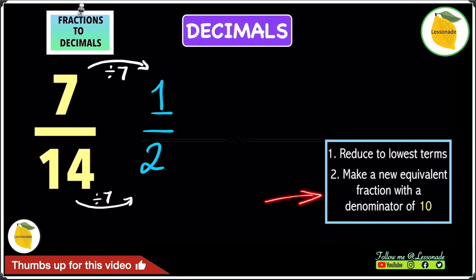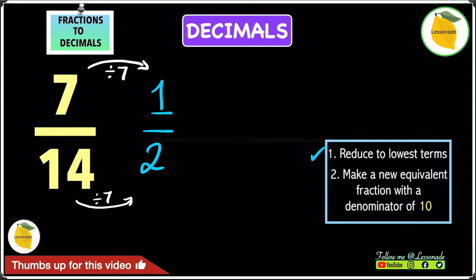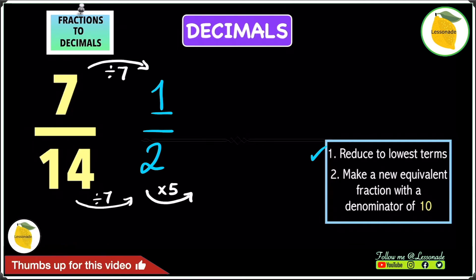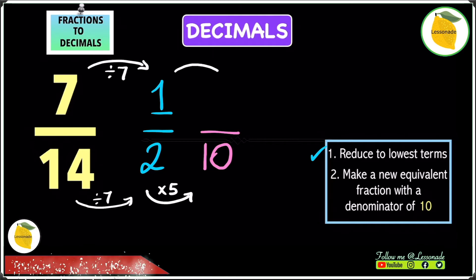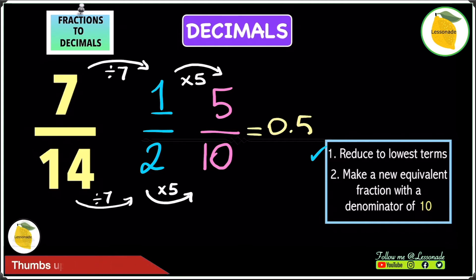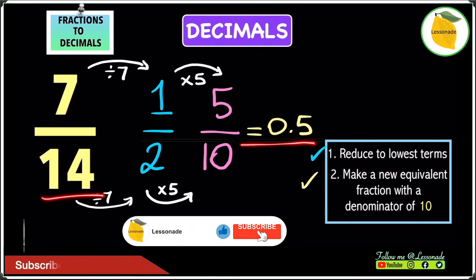The second step is to make a new equivalent fraction with the denominator of 10. To make this denominator 2 into a 10 we multiply by 5, because 2 times 5 is 10. Whatever you do to the denominator you do to the numerator, so you do 1 times 5 which gives you 5, and you get 5 over 10. 5 over 10 as a decimal is 0.5. So 7 over 14 converted into a decimal is 0.5.